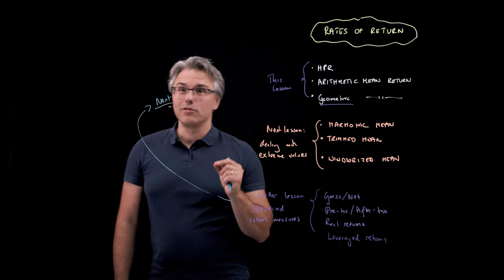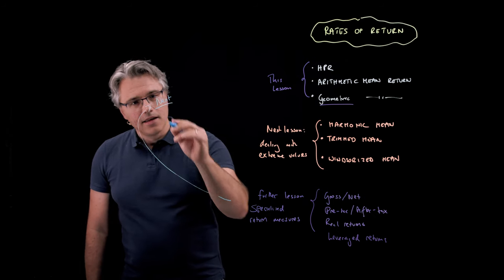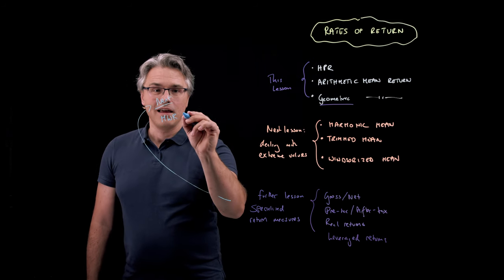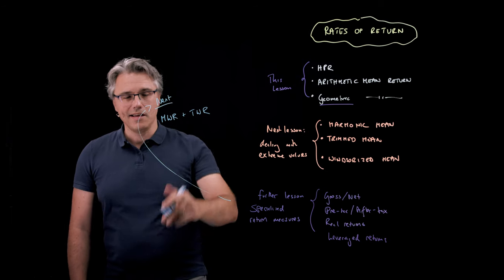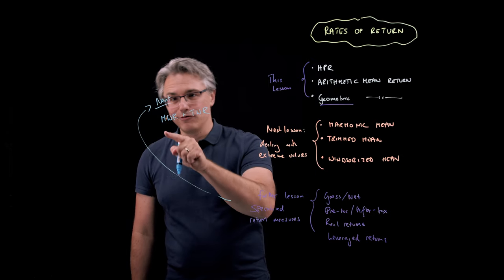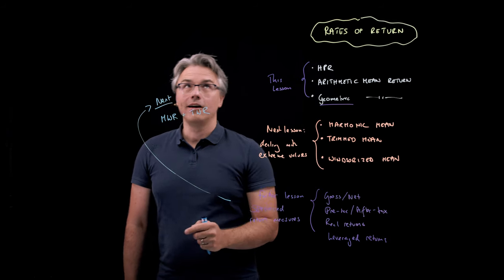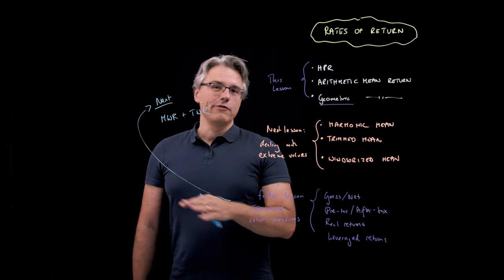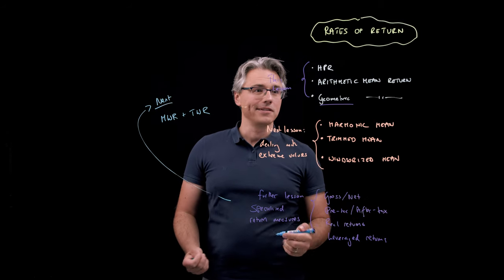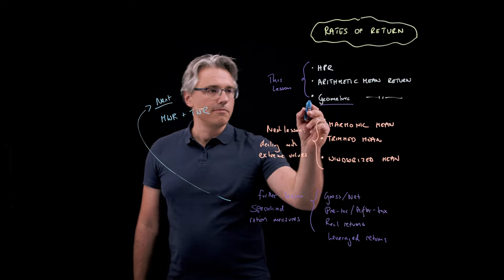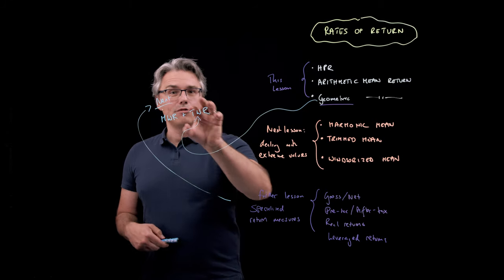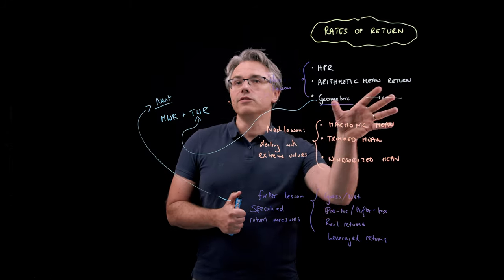We're going to discuss some return measures which are absolutely critical: the MWR — the money-weighted return — and the time-weighted return. If there is a single thing you learn from this topic, make sure you know how to do MWR and TWR, because I can predict these topics are going to come up on the exam. The good thing is that the geometric mean, which we'll learn about here, comes under a different name over there — it's called the TWR. So what you learn here will reinforce what we do there as well.